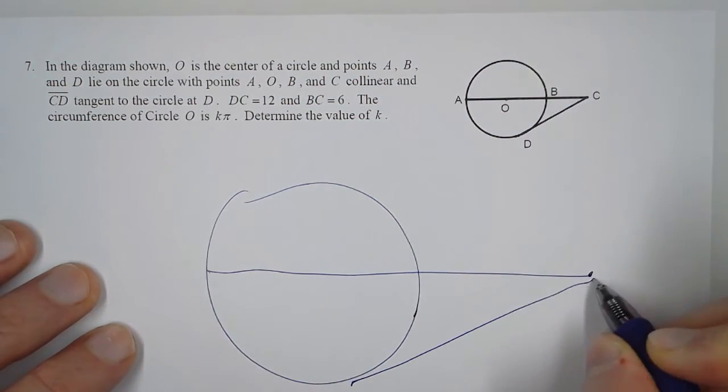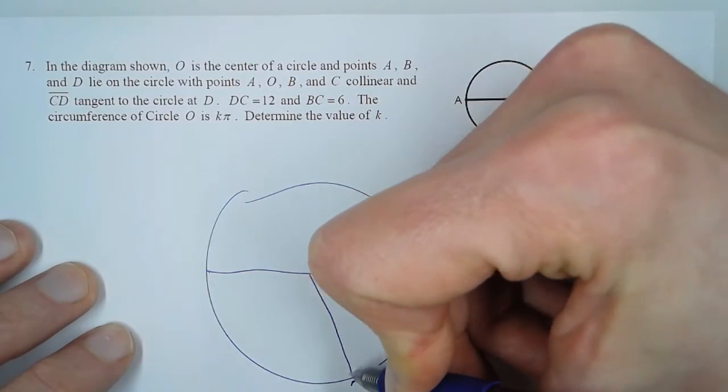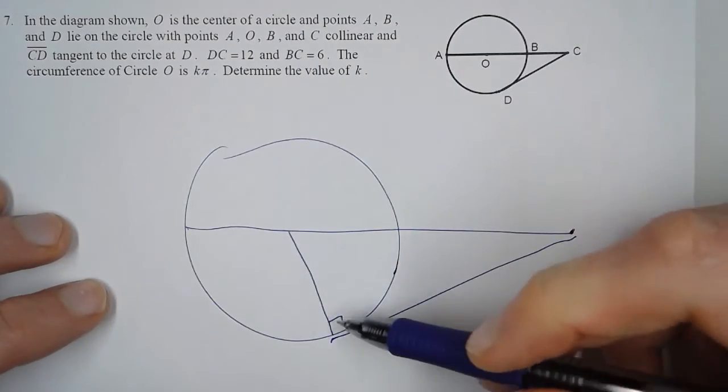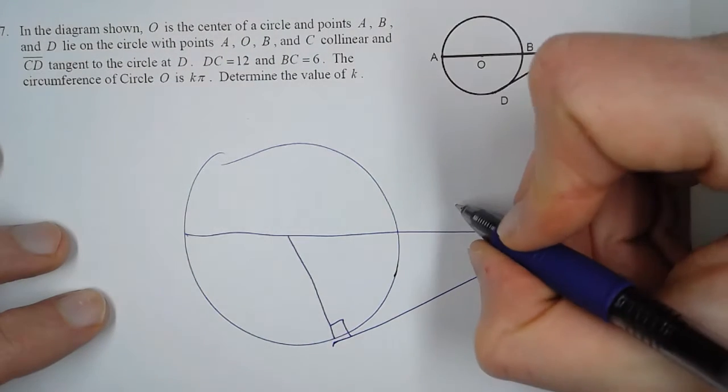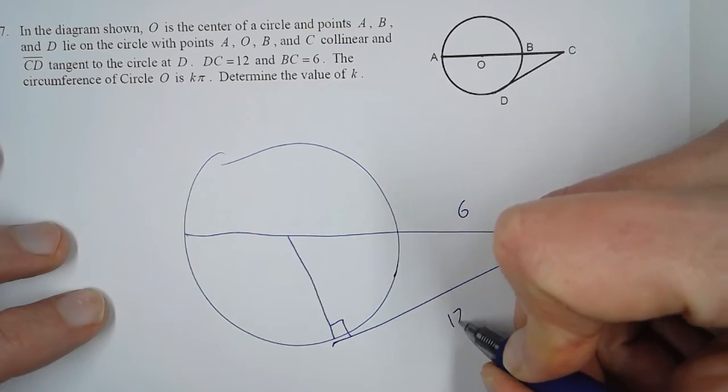Because this is a tangent, when we draw the radius it forms a 90 degree angle. They tell us that BC is 6 and that DC is 12.